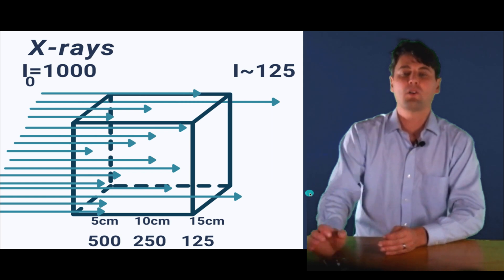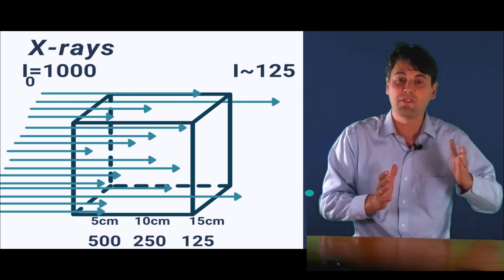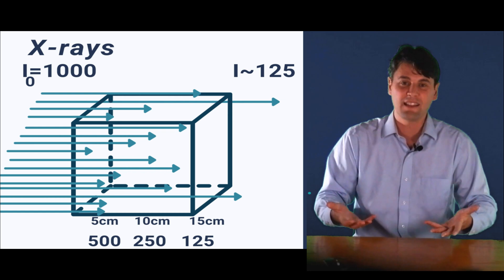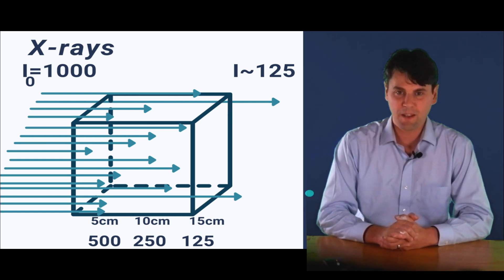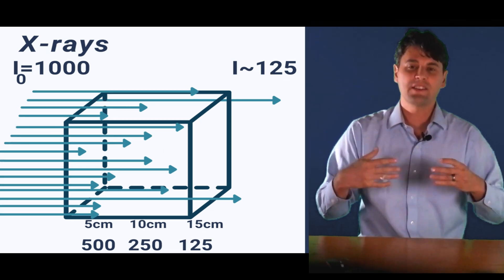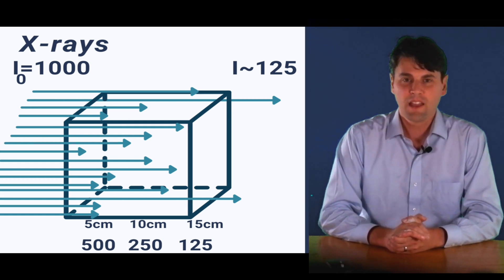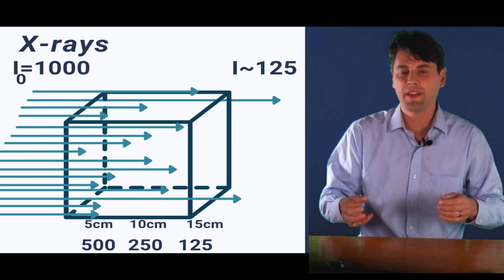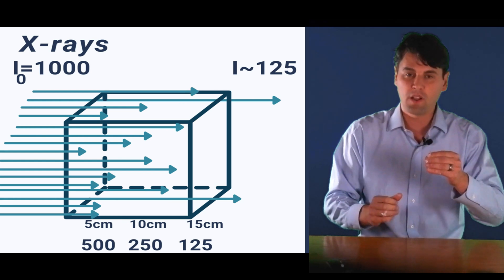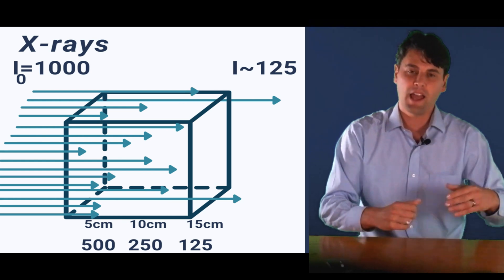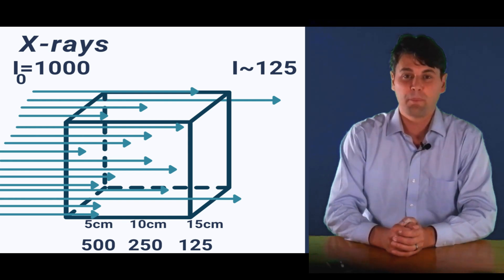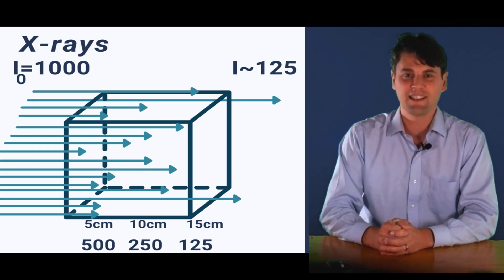So as you're going through, if we start with 1000, we're going to have 500 making it to five centimeters, 250 making it to 10 centimeters, and as we get to 15 centimeters in, we only have 125 x-rays that are going to be making it through. This is different than those charged particles because the x-rays essentially are going through and they're just going to have one interaction as they come through. They're either going to stop with photoelectric or they're going to scatter, but they're not going to have many small interactions such as the charged particles or those BBs going through the gelatin.